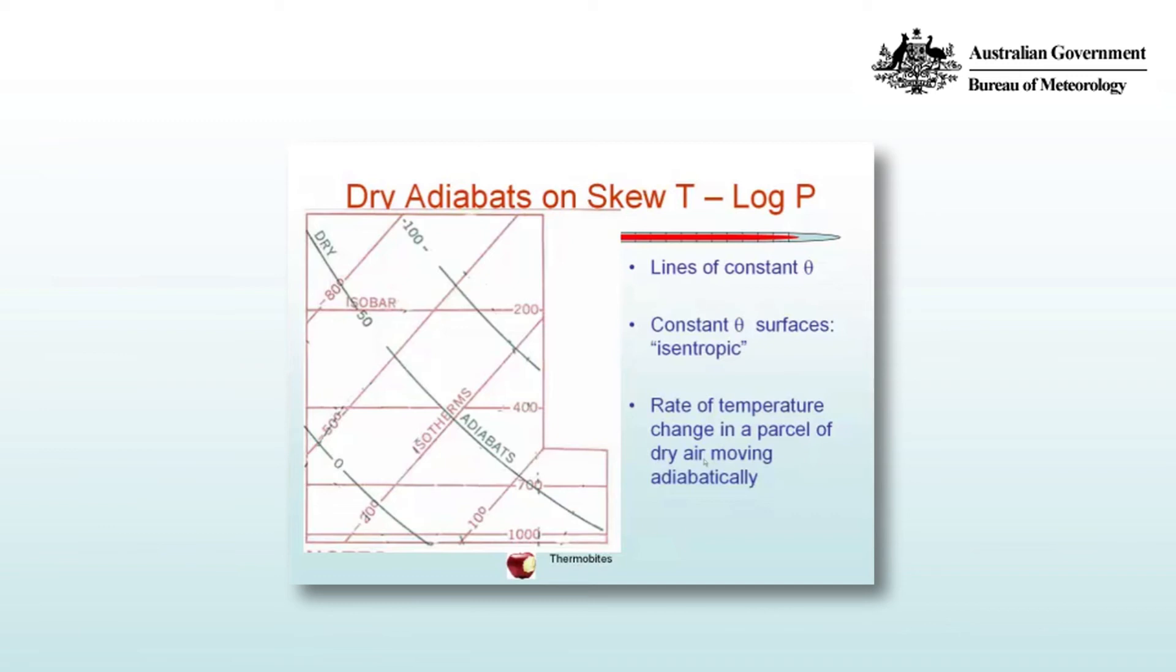As a parcel moves along these dry adiabats, ascending from 1000 hectopascals, it moves from right to left on the diagram, cutting across decreasing isotherms—cooling dry adiabatically. The dry adiabat represents the rate of temperature change of a parcel moving dry adiabatically.